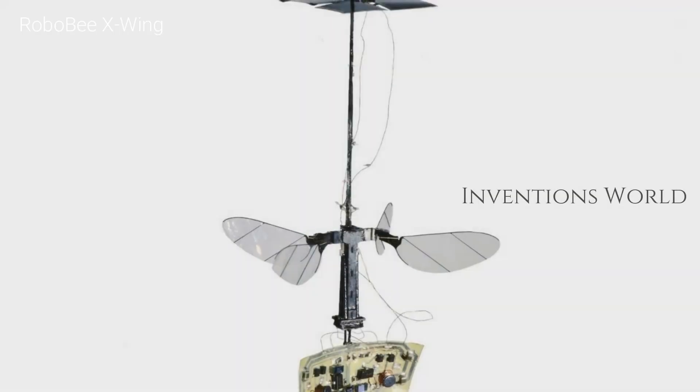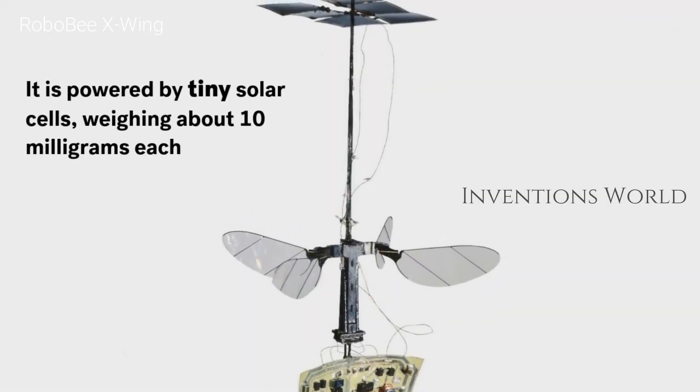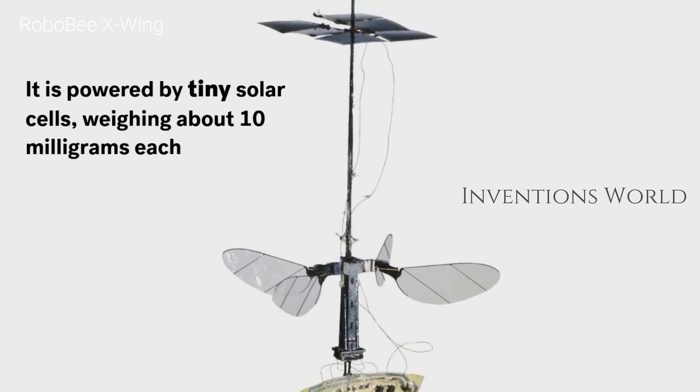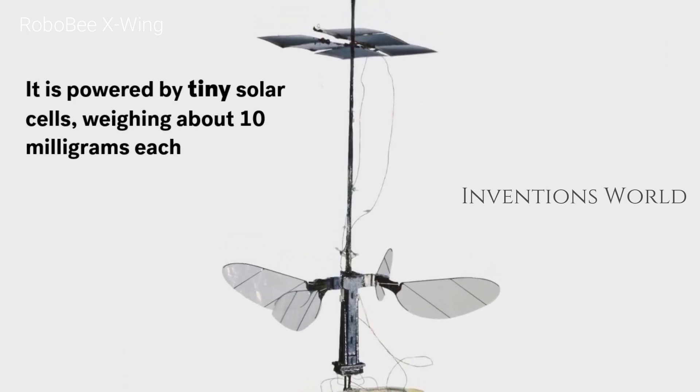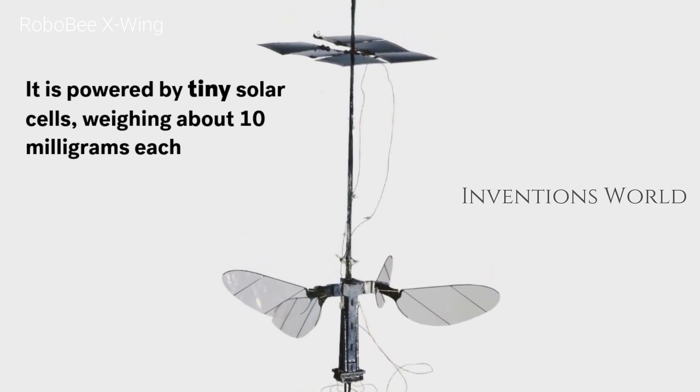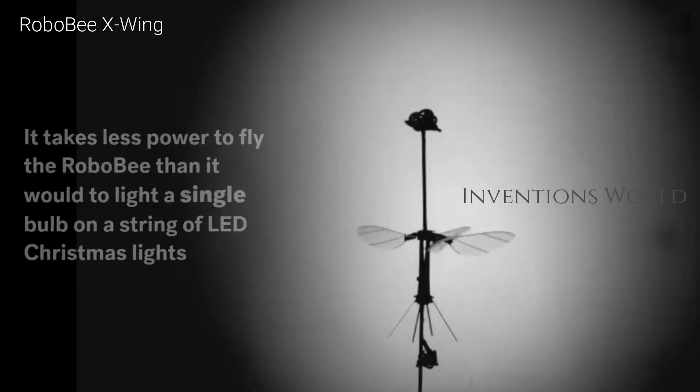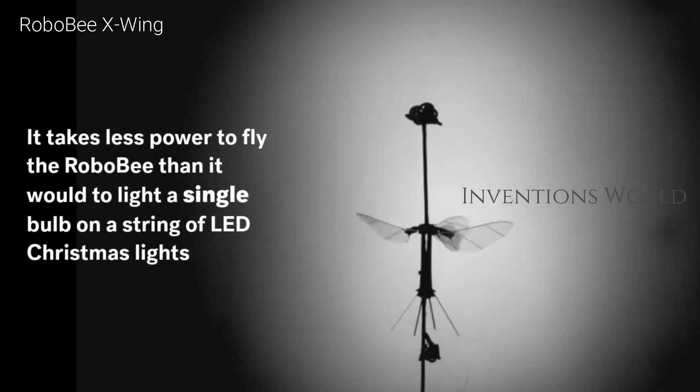The insect-robot's wings begin flapping when exposed to light. Currently, it has only been tested in the lab, where it is powered by a combination of halogen and LED lighting. Limited by the positioning of the artificial lighting, the robot normally flies for around half a second before it leaves the field of light.